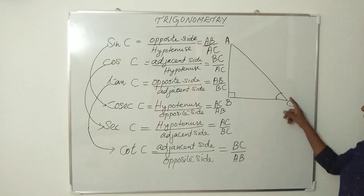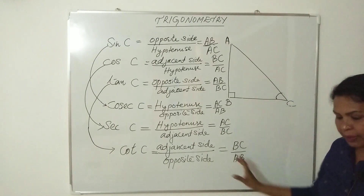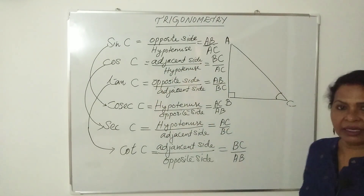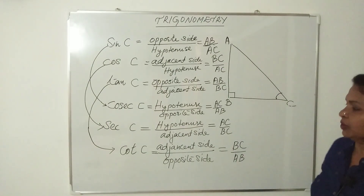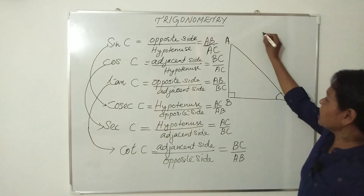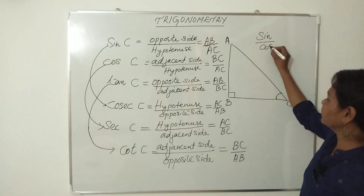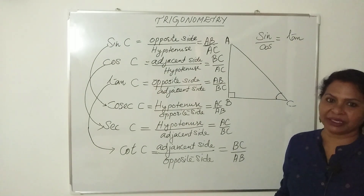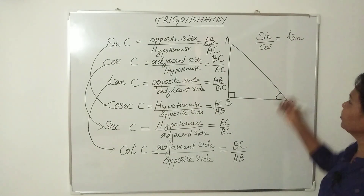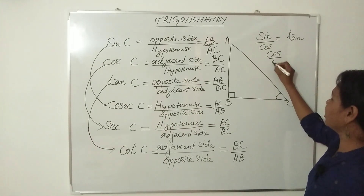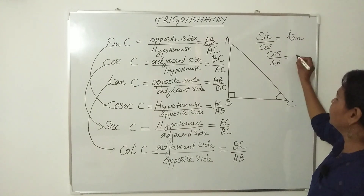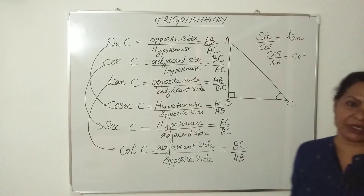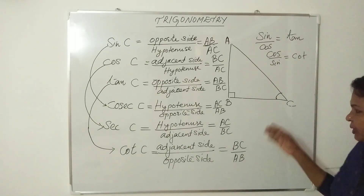This is the complete set of trigonometric ratios for angle C. Now let us learn a key relation: sine divided by cosine gives tangent, and cosine divided by sine gives cotangent. We will also learn the exercise questions using these relations.